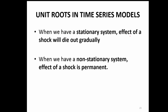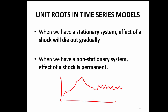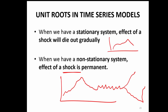When we have a stationary system, the effect of any shock that happens to the time series will die out gradually. In a stationary series, if there is a shock and the series moves up, it eventually comes down and reverts to somewhere near the mean. But that is not the case in a non-stationary system — if there is a shock and something goes up, it never comes down to the mean and never approaches the long-run mean.